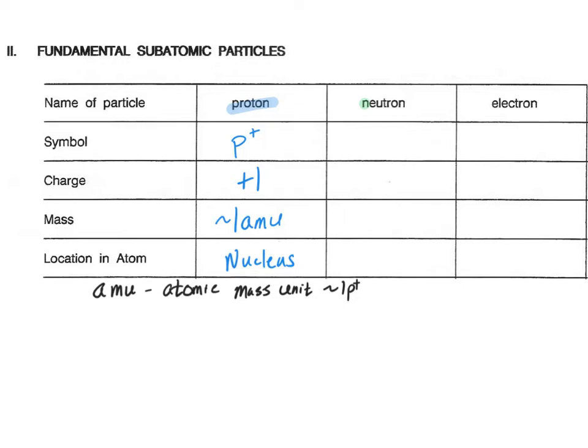So let's go on to the neutron. Neutron has the symbol n0. It has a charge of zero, no charge. Its mass is approximately one amu, very close to the mass of the proton. There is a very small difference, but we're going to just say it's one amu for those two. It is also found in the nucleus.